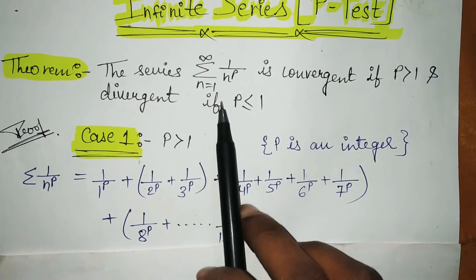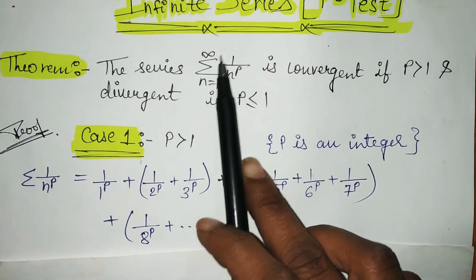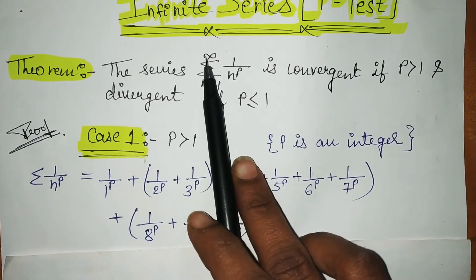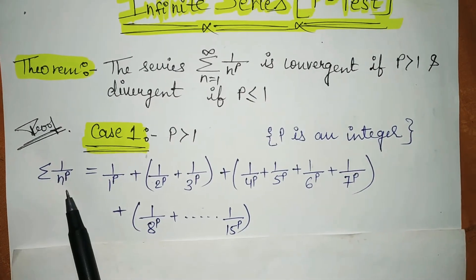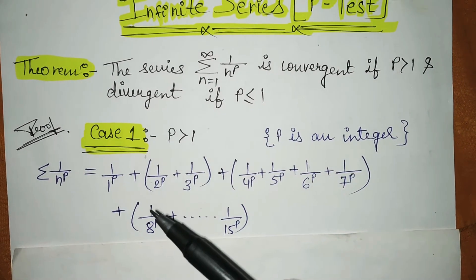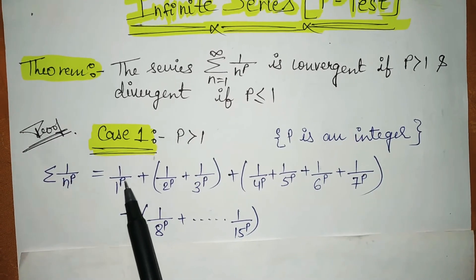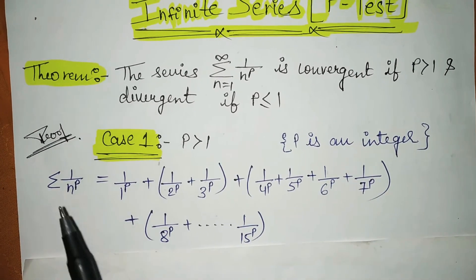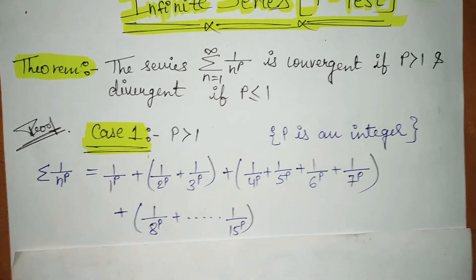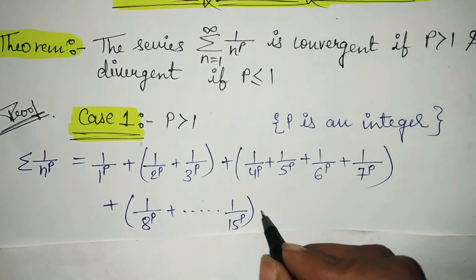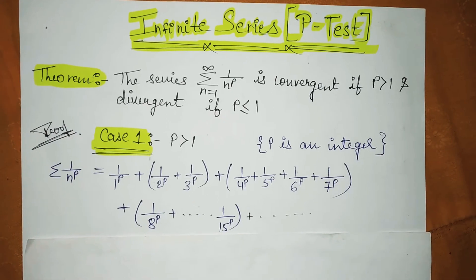The summation value represents the limit shown. So n starts from 1 and goes up to infinity. We write this series by putting values of n one by one: when n=1 we get 1 upon 1 to the power P, when n=2 we get 1 upon 2 to the power P, and so on up to infinity. Now, we leave the first term and start pairing terms from the second term onward.